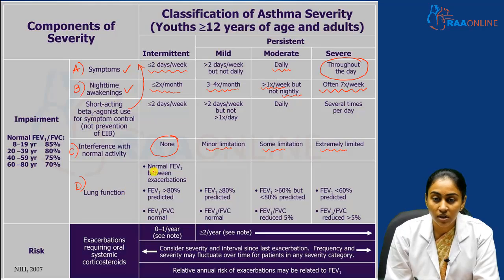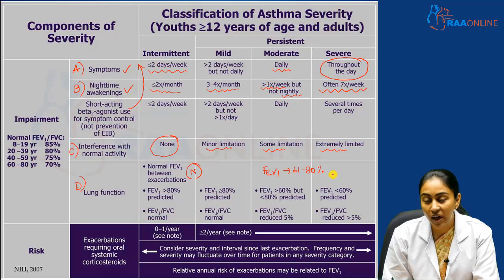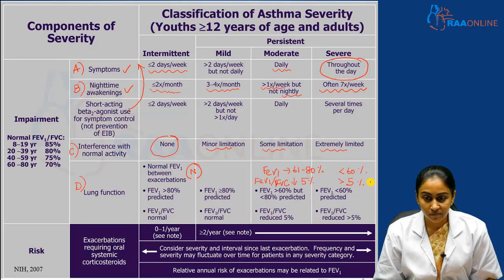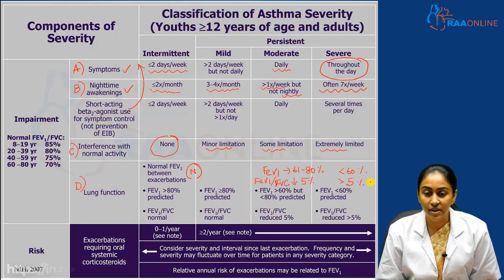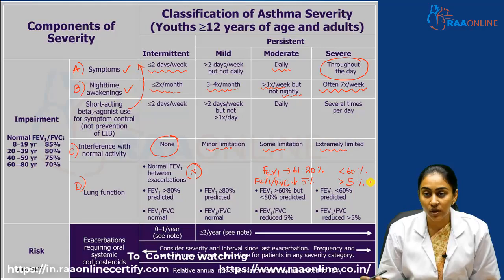Lung function is largely preserved in both intermittent and mild persistent bronchial asthma. In moderate persistent asthma, FEV1 is more than 60 but less than 80 percent. In severe persistent asthma, FEV1 is less than 60 percent. For the FEV1/FVC ratio, a decline of up to 5 percent corresponds to moderate persistent, while a decline of more than 5 percent indicates severe persistent. Intermittent asthmatics typically have exacerbations about once a year, while two or more episodes per year is seen with persistent bronchial asthma.